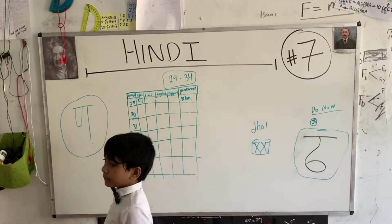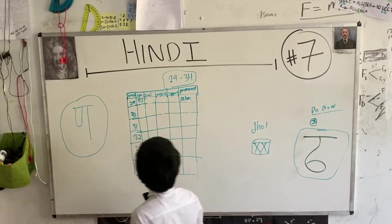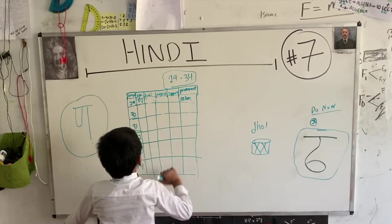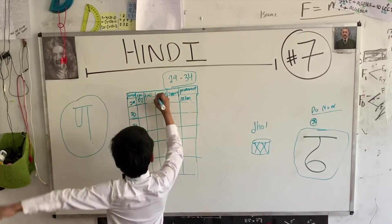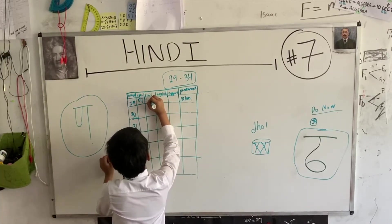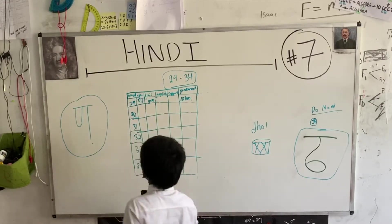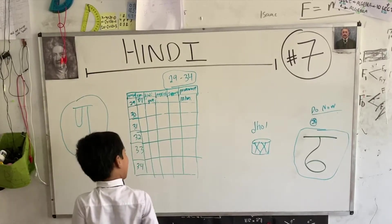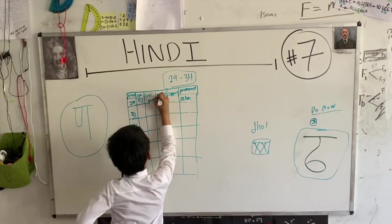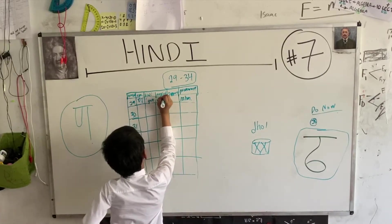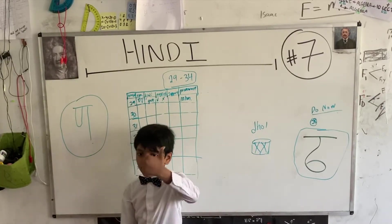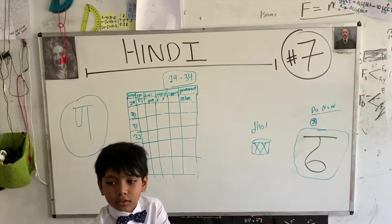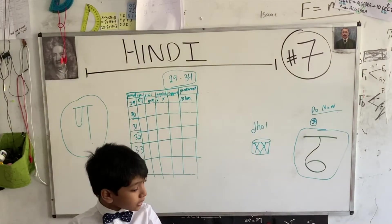Correct me in the comments below if you would like. An example of this is in 'Goon.' Goon actually means an attribute, a quality. It could be a good attribute or a good quality — like this eraser has good quality, it can erase pretty fast.